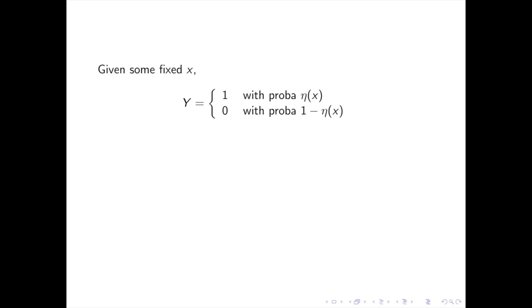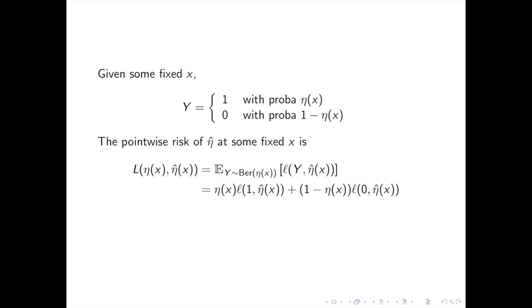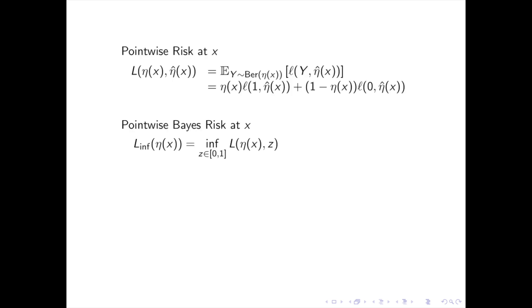Given some fixed x, recall that y is a Bernoulli distribution of parameter eta of x. The pointwise risk L of eta hat at some fixed x is defined as the expectation with respect to y of L of y eta hat of x. Given some fixed x, the pointwise bias risk L infimum at ground truth eta of x is the smallest possible pointwise risk at eta of x. For any fixed x, we define the pointwise regret of eta hat of x at ground truth eta of x as the difference between the pointwise risk L and the pointwise bias risk L infimum.